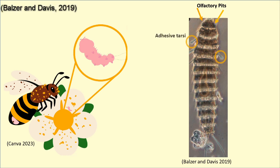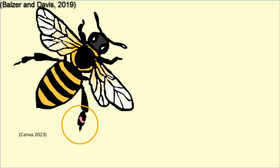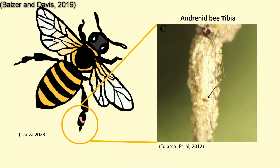Flexible adhesive tarsi on the larvae's mesothoracic legs are used to attach themselves to the plumose hairs of the bees used for pollination, in order for them to translocate to the bee's brood cell.